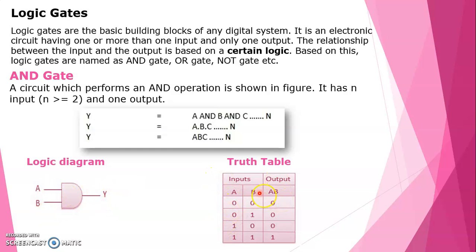Truth table for AND gate with inputs A, B and output: 0 into 0 is 0; 0 into 1 is 0; 1 into 0 is 0; 1 into 1 is 1. This is the truth table and logic diagram for the AND gate.